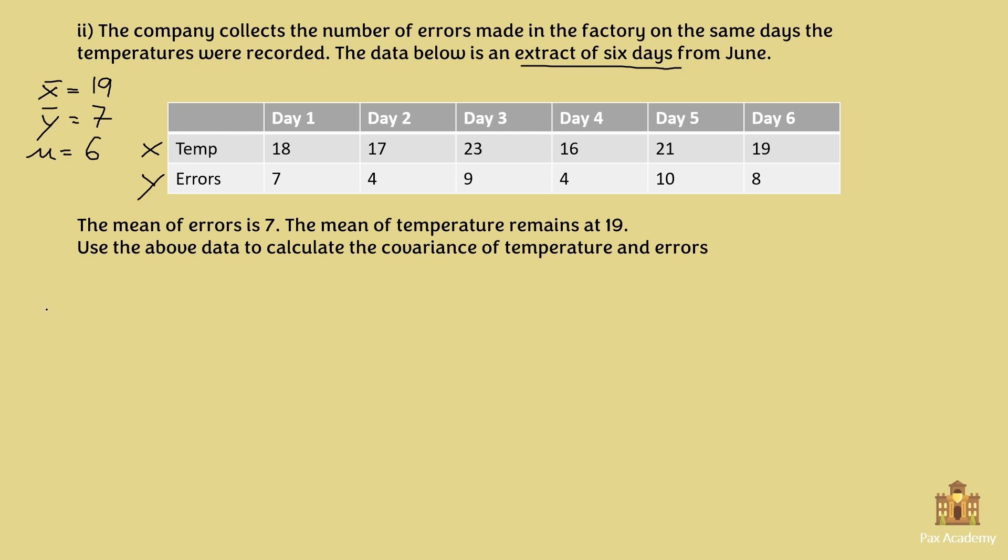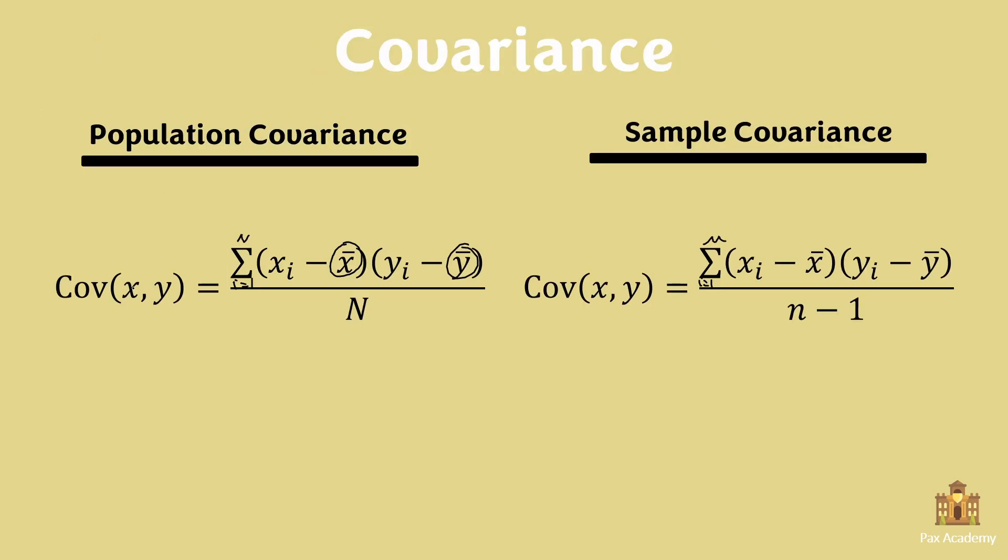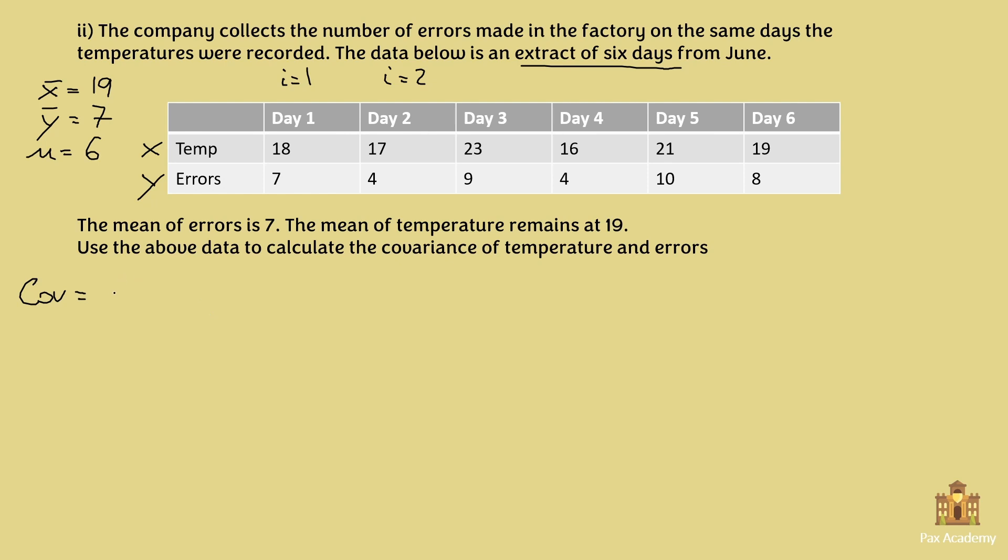So let's apply the formula. So the covariance is equal to, remember, xi. So i takes the value of starts at 1 and can be up to n. So here, i is equal to 1 on day 1. Here 2, i is equal to 2, and so on. So the covariance starts with x1 minus x bar. So x1, in this case is 18 minus x bar, which is 19, times y1 minus y bar, so 7 minus 7. And then we carry on for the other terms.